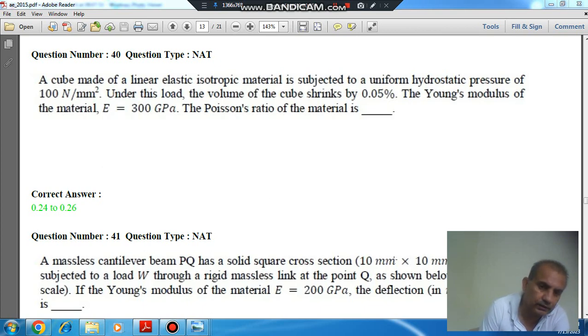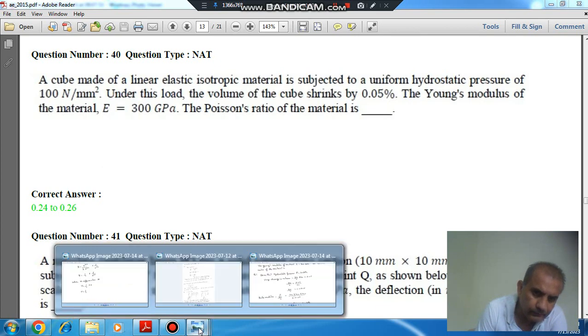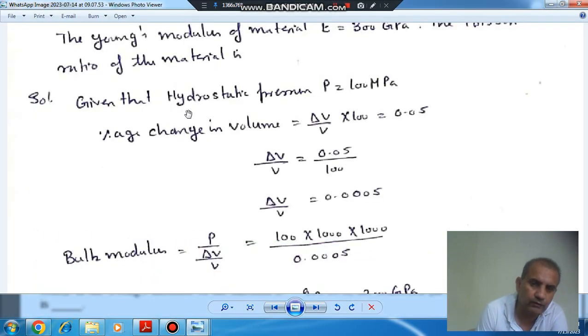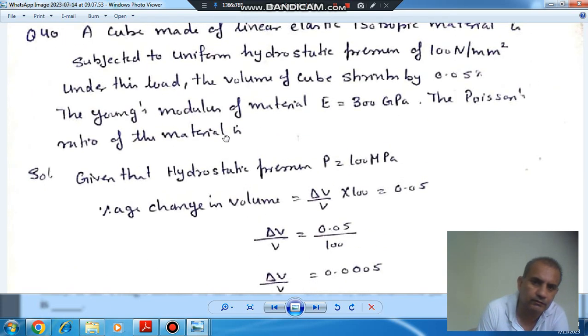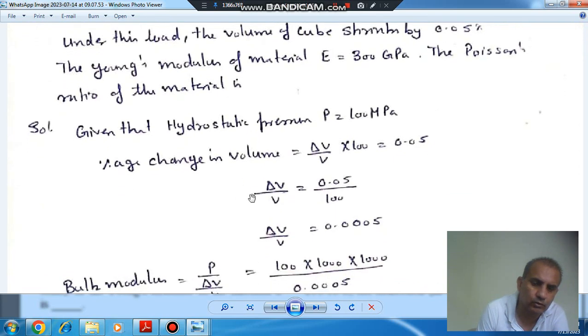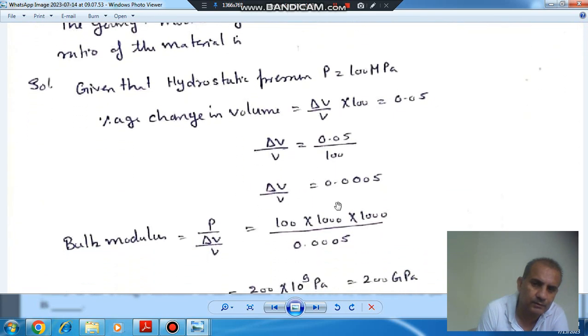So here, first of all, we find out the percentage change in volume. That is del V by V into 100, that is 0.05. So, del V by V comes out as 0.0005.